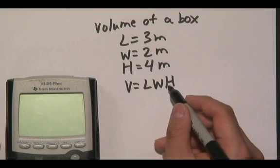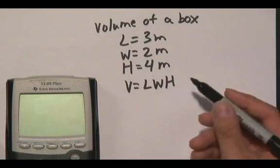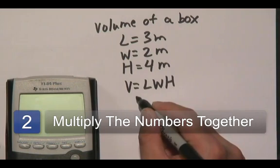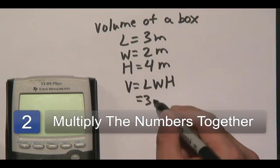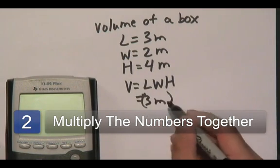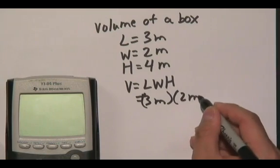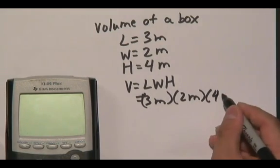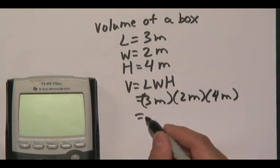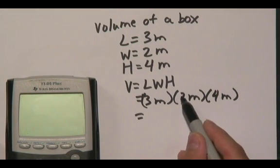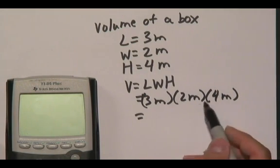So all you really need to do is plug all the numbers in, but make sure you include the dimensions. So you have three meters times two meters times four meters. Now three times two is six and six times four is 24.